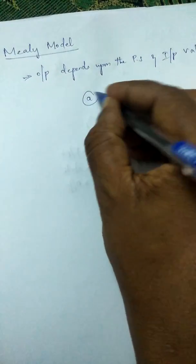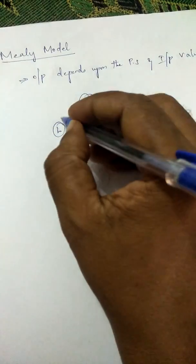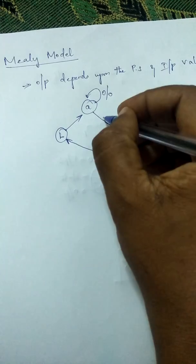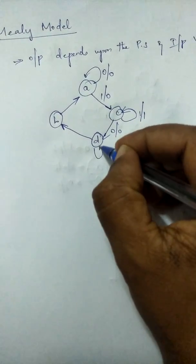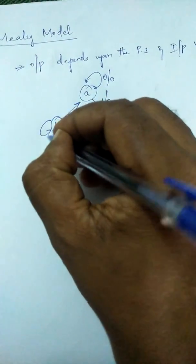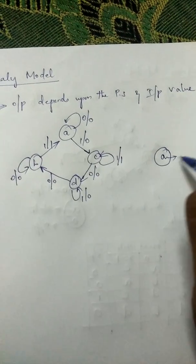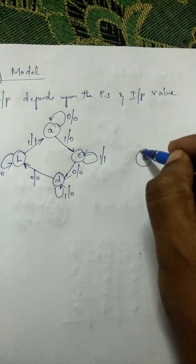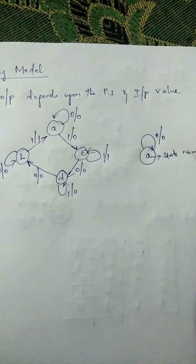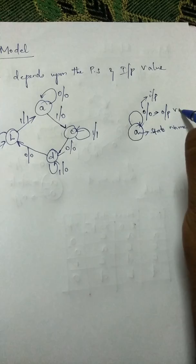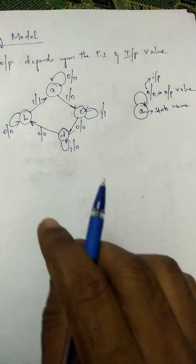Consider four states A, B, C, and D. This is an example of a Mealy model. Considering a particular state A — this is the state name — we have some values over the arrow marks, like '0/0'. The above value represents the input and the below value represents the output.